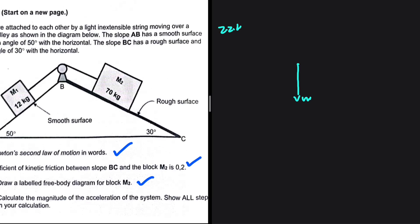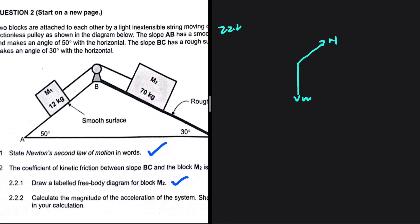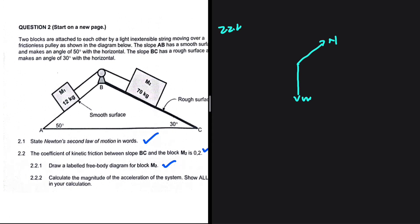Our object is resting on a surface, so we expect a normal force. M1 and M2 are connected by a light inextensible string, so we are going to have our tension force.